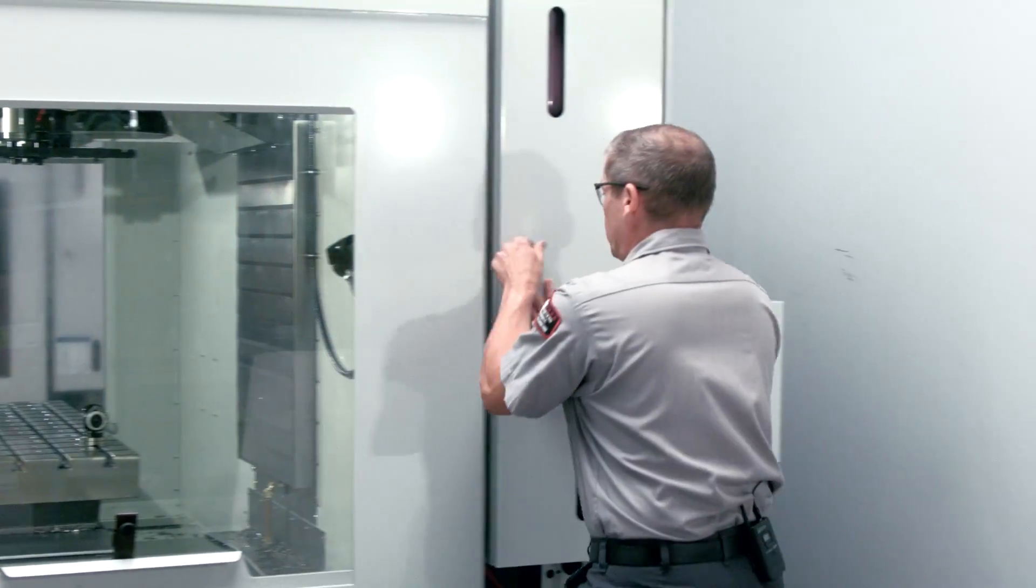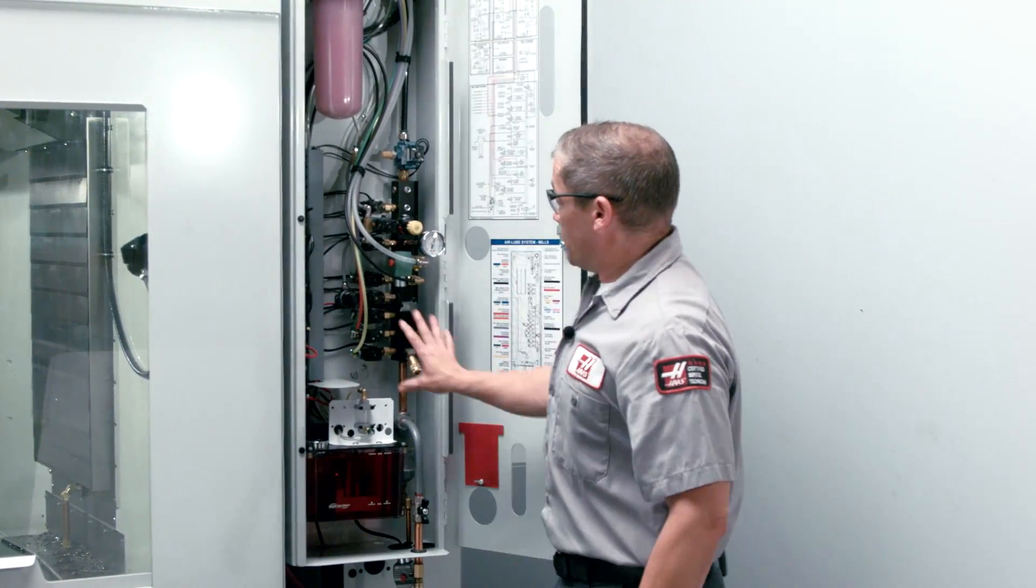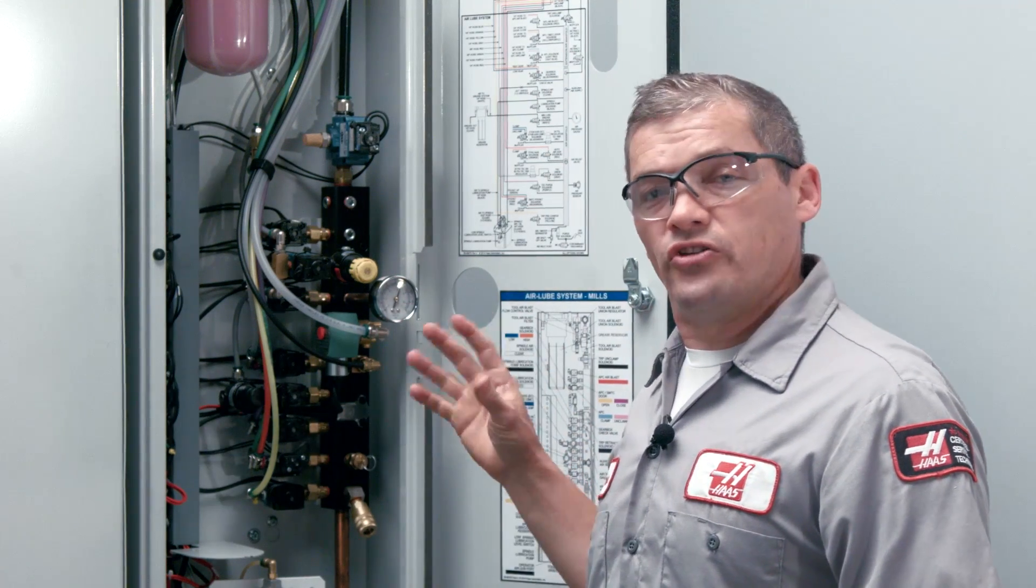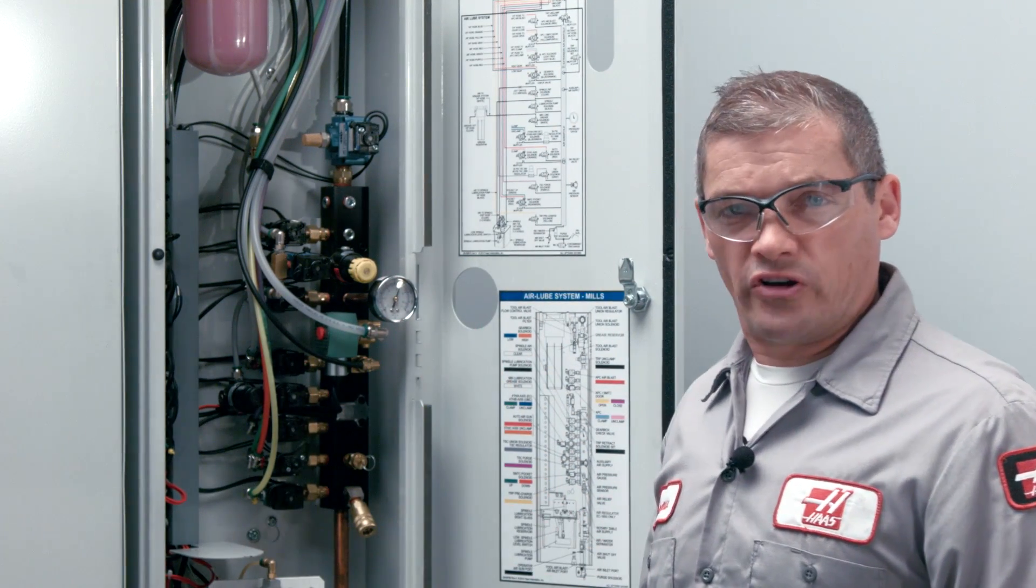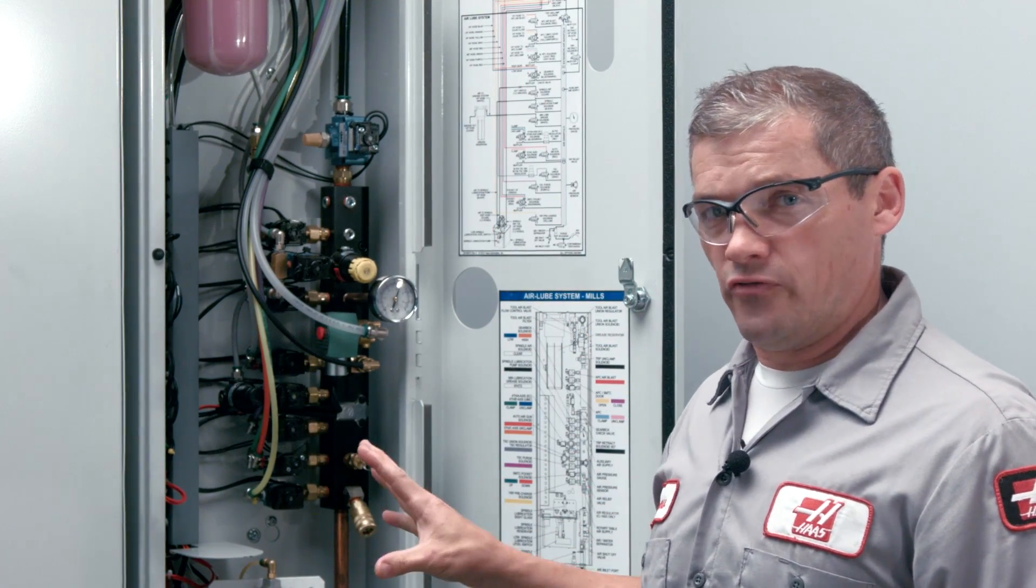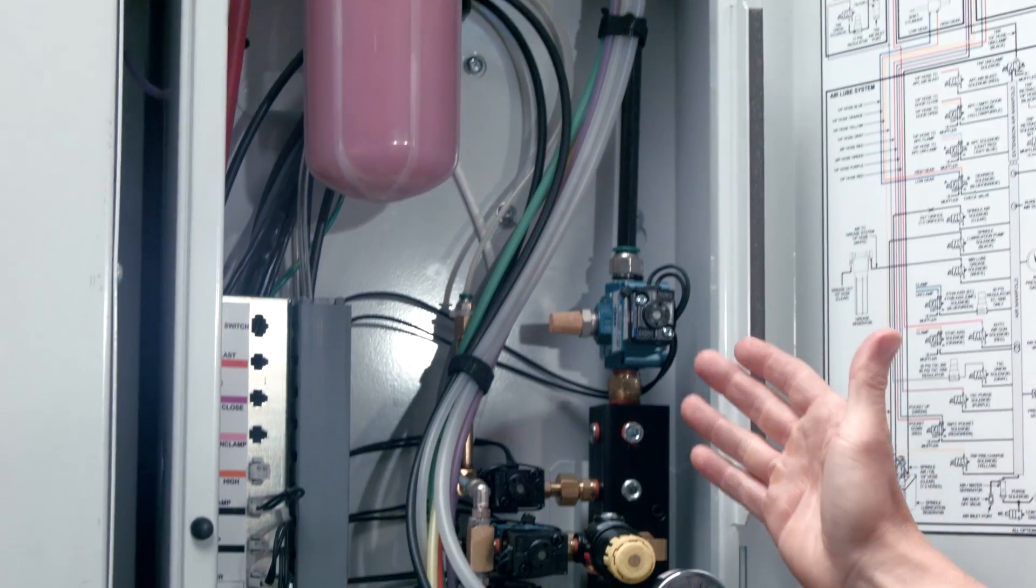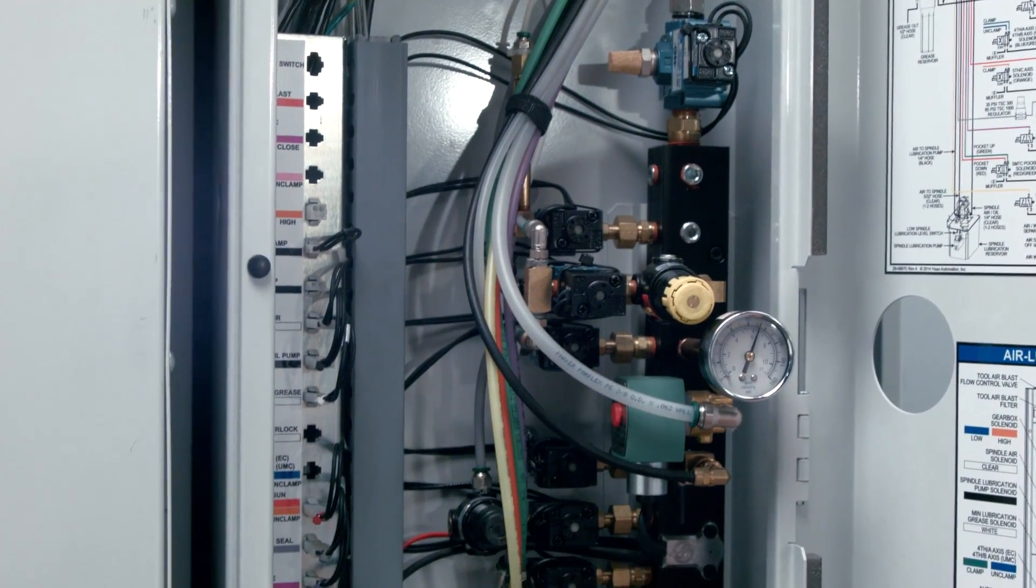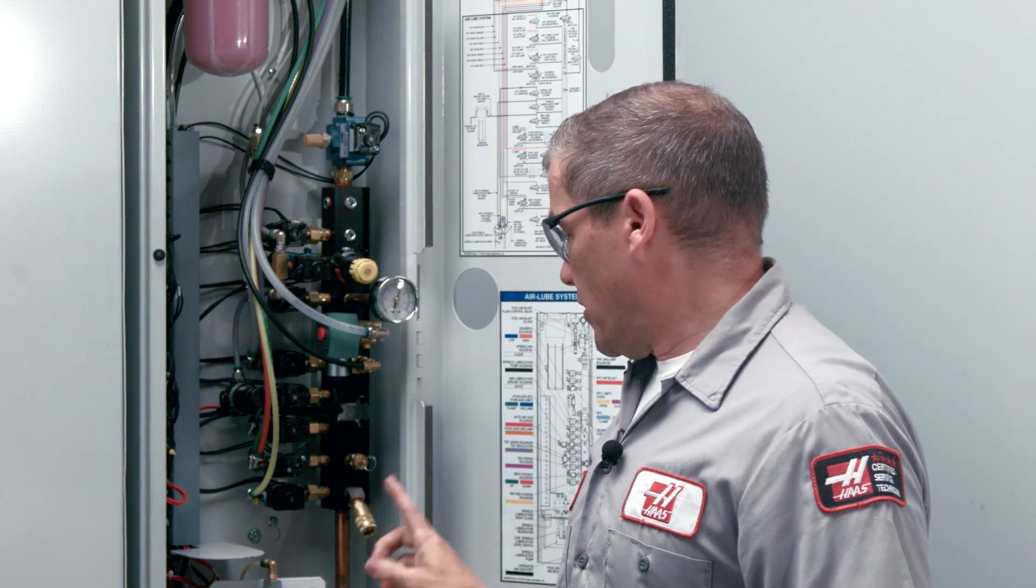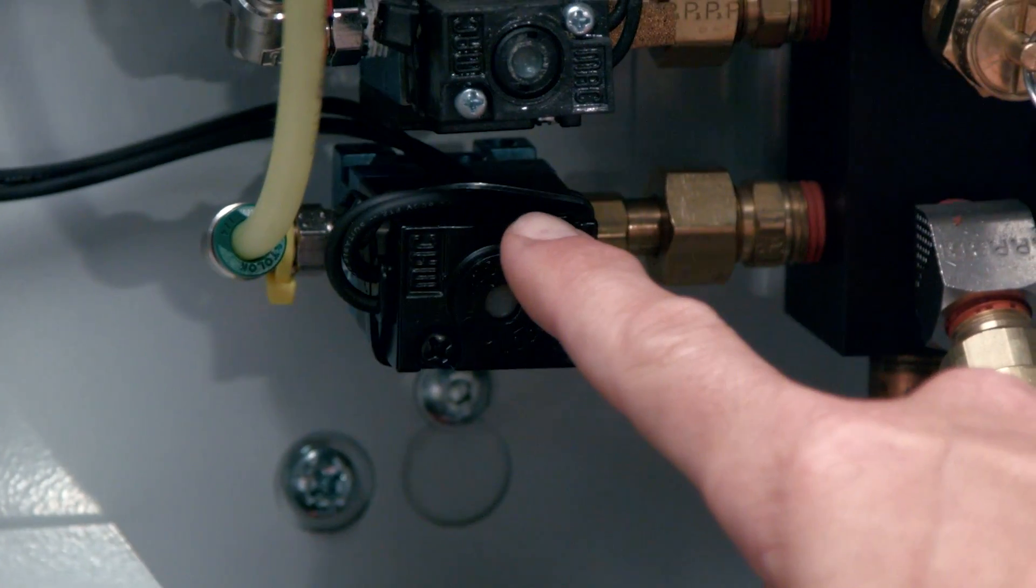Now the pneumatic system and all of these solenoids that it powers are here to control all devices on the machine that use compressed air. And when you have a problem in this region, probably the real question you're asking yourself is: do I have a problem with my pneumatic system, or my electrical system, or with one of these specific solenoids right here? Well in this video today we're going to help you try to clear that up.